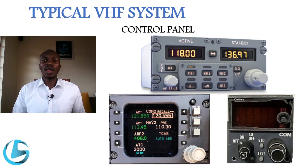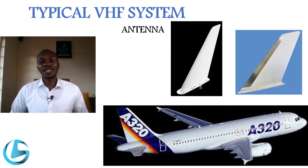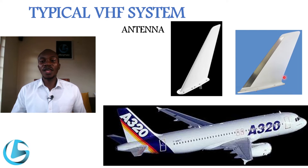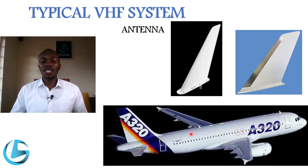The final component found on a VHF communication system is the antenna. The antennas are vertically mounted on top of the fuselage and at the bottom of the fuselage, because VHF radio frequencies are vertically polarized. As you can see in the pictures, this is an example of a VHF antenna on an aircraft. They are mounted with one antenna for VHF1, one for VHF2, and one for VHF3 — on both the top and bottom of the aircraft fuselage.